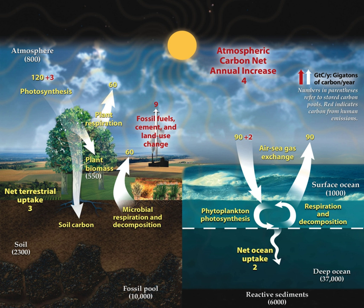Carbon in the Earth's atmosphere exists in two main forms: carbon dioxide and methane. Both of these gases absorb and retain heat in the atmosphere and are partially responsible for the greenhouse effect. Methane produces a larger greenhouse effect per volume as compared to carbon dioxide, but it exists in much lower concentrations and is more short-lived than carbon dioxide, making carbon dioxide the more important greenhouse gas of the two.